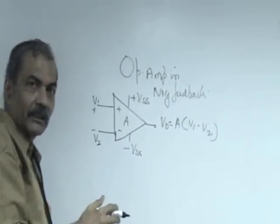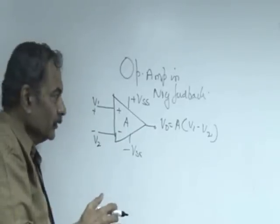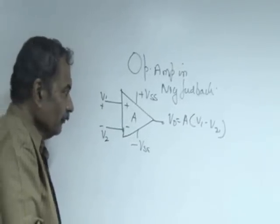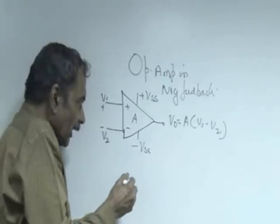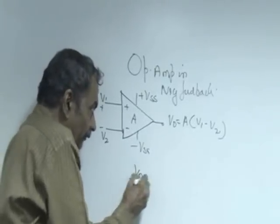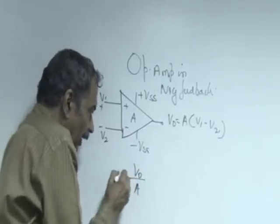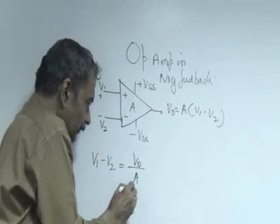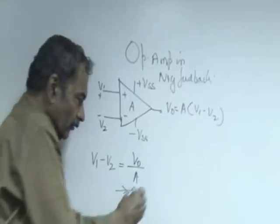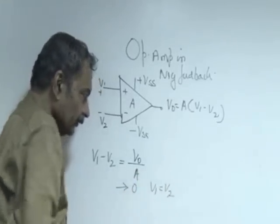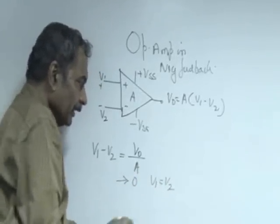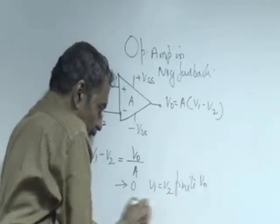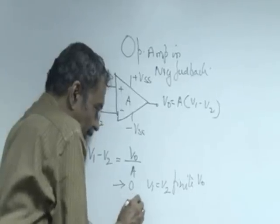The output coefficient voltage is designed to be zero or it has zero offset when the input is zero. With this kind of op amp as V naught is kept finite, V naught by A which is nothing but the difference in voltage at the input tends to zero, or V1 becomes essentially close to V2 for any finite V naught as A tends to infinity.